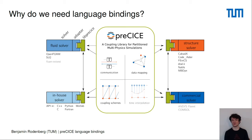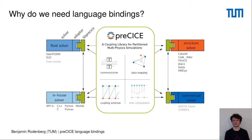First of all, why do we actually need language bindings? With Precise we want to couple different solvers. Let's take the example of coupling OpenFoam and Phoenix. OpenFoam is a solver written in C++, and Phoenix is a solver with a Python interface. This means we have to couple two different languages, and for this purpose Precise offers language bindings for different languages like C++, Python, Matlab, Fortran, and C.